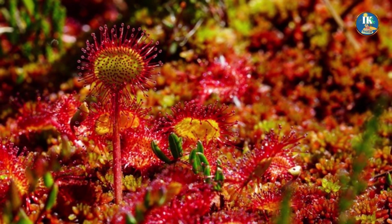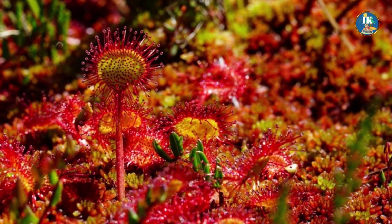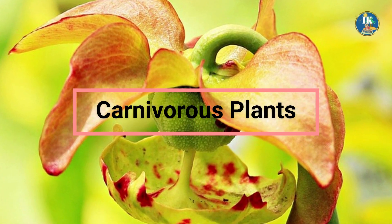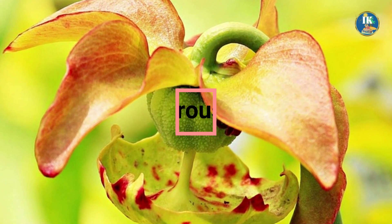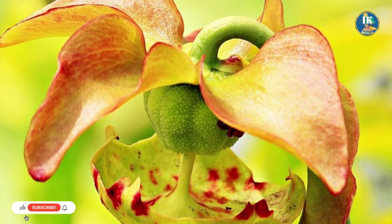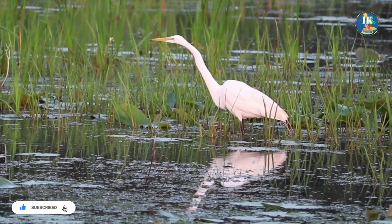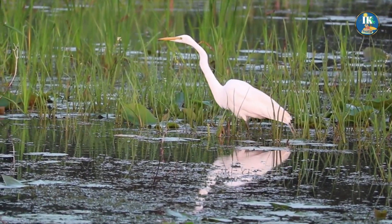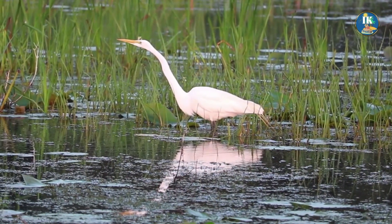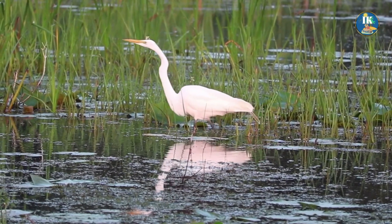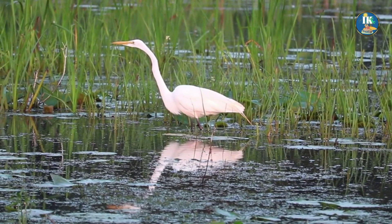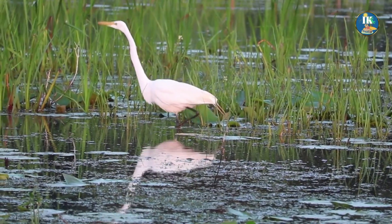In today's video, we are going to discuss some fascinating stuff about plants that are acting like real killing machines. Carnivorous plants come in various types, and each one has a distinctive method of catching and digesting its food. These plants are intriguing as they show how plants can thrive in harsh conditions by evolving in special ways to get the nutrients they need. They can be found in diverse habitats such as bogs, swamps, and deserts. Let's delve into some interesting facts about them.